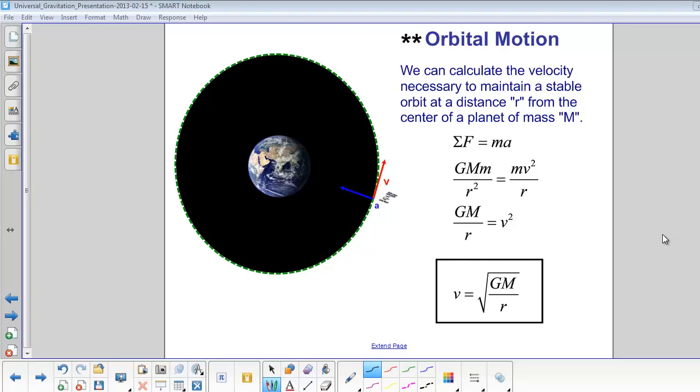We can calculate the velocity necessary to maintain a stable orbit at a distance r from the center of a planet with mass M. Start with Newton's law, ΣF = ma. Our ΣF is simply the gravitational force: G times big M times little m divided by r squared.